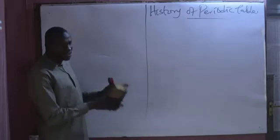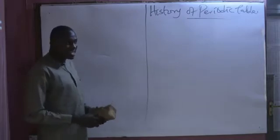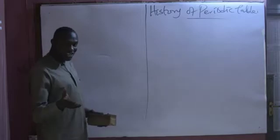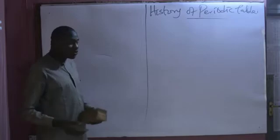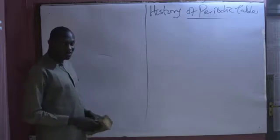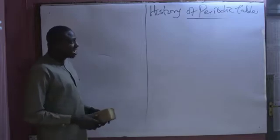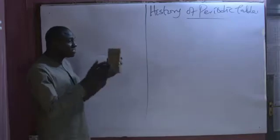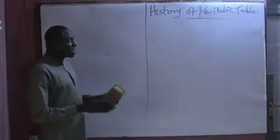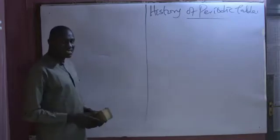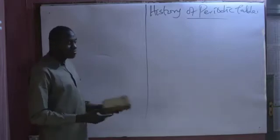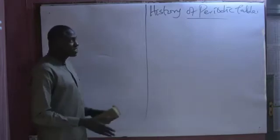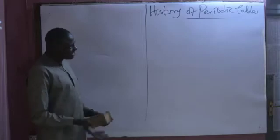The charge on an electron was discovered by Millikan. And it was Ernest Rutherford who discovered the proton, while the neutron was discovered by Chadwick. But it was when all these discoveries were in place that we now have the modern periodic table, where elements have been arranged based on their atomic number.